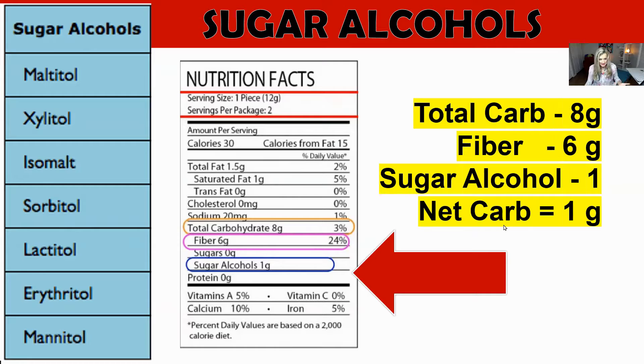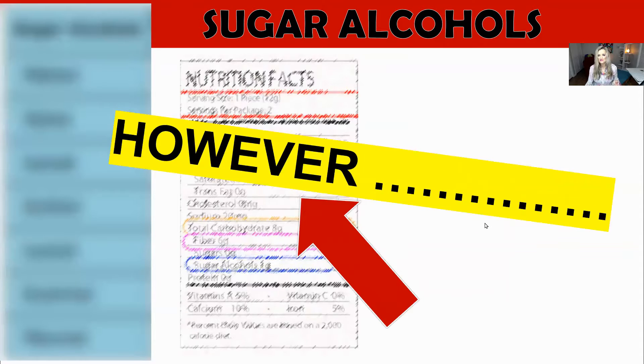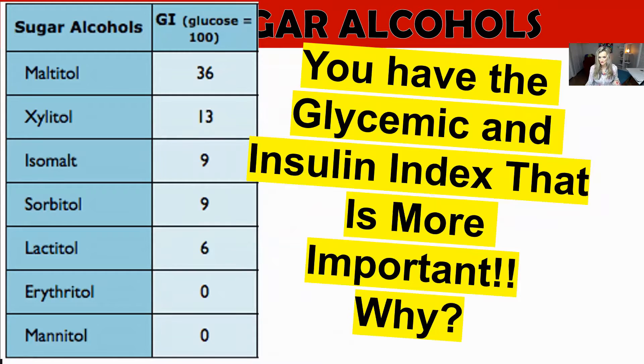If you want to spend the time to deduct all of these, I don't see an extreme upside because it's a lot of work. My opinion is that what's more important is what you're putting in and the glycemic index of a certain food or sugar alcohol — rather than going through all of this, it's more important to understand how the food reacts in the body.